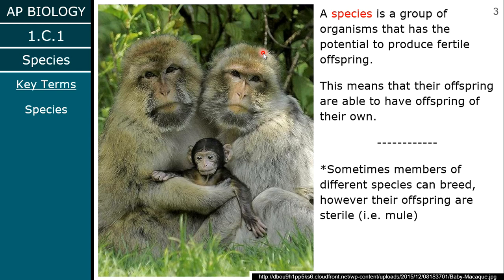Mules are actually not a species at all technically, because they cannot produce their own offspring. Donkeys and horses are different species because the children they do have are infertile — they're sterile.